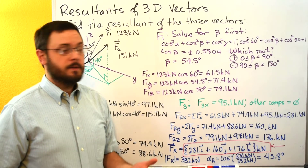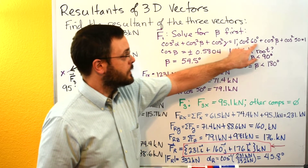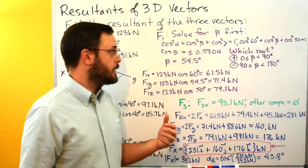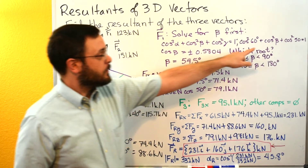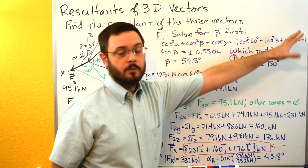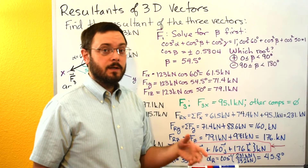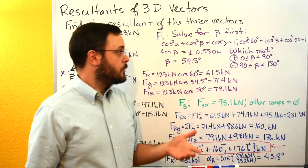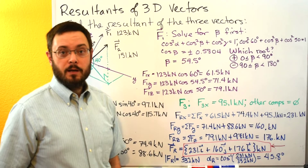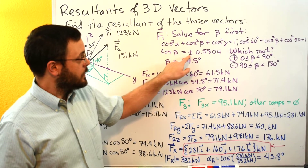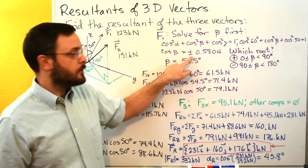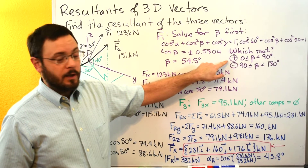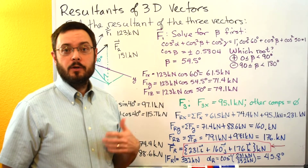We can go ahead and get a decimal answer for cosine of alpha and cosine of gamma, square those, subtract them from one, and then we'll have cosine squared beta equal to some number. When we take the square root, remember that the root can be either positive or negative, so we get either positive or negative 0.5804.